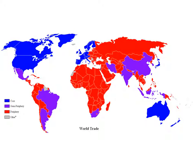This is a map of what the core-periphery model looks like today. The United States, Canada, many European countries, Australia, Japan, and New Zealand are all core countries. Semi-peripheral countries include Mexico, Brazil, Argentina, Iran, India, China, South Africa, and Indonesia, among others.